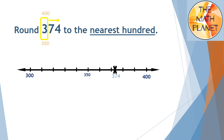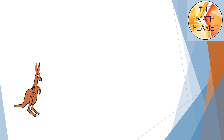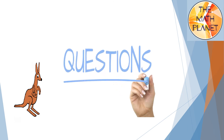I will put my number 374 on the number line and notice it is closer to 400, so I will round it up to 400. The answer will be 400. Now let's check whether you understood the lesson by solving some questions.